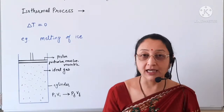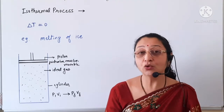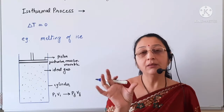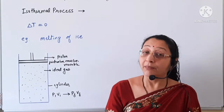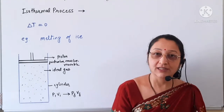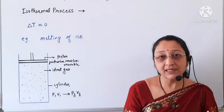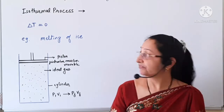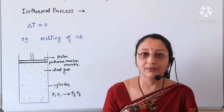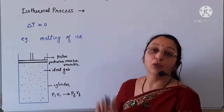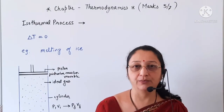We are going to discuss today about the isothermal process. The word isothermal: 'thermal' means temperature and 'iso' means constant. So the temperature remains constant. The temperature of the system remains constant, that is the change in temperature is zero — delta T is equal to zero. The isothermal process is a constant temperature process.